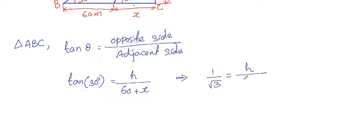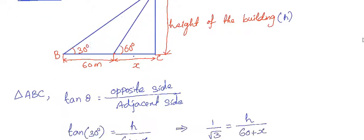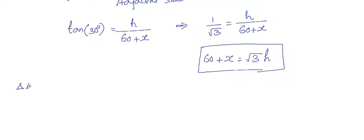So tan 30 is 1 by root 3, equals h by 60 plus x. So just cross multiply, we'll get 60 plus x equals root 3 times h.